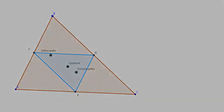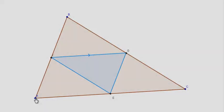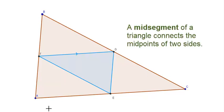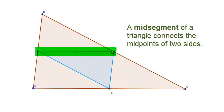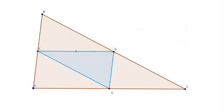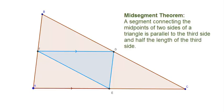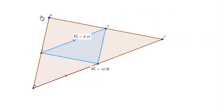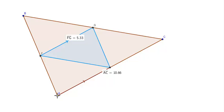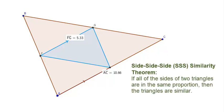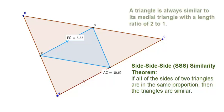Let's review some properties of a medial triangle. The sides of the medial triangle are called mid-segments. Mid-segments connect the midpoints of two sides of a triangle. Through the mid-segment theorem, we know that each of these segments is not only parallel to the third side of the triangle, but also half the length of that third side. Since each mid-segment has that half-length relationship with each side of the larger triangle, we can use the side-side-side similarity theorem to prove that a triangle is always similar to its medial triangle, with a length ratio of 2 to 1.